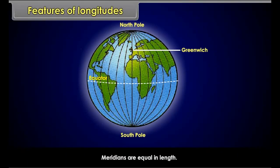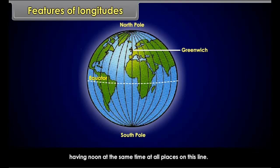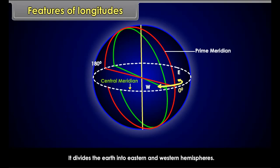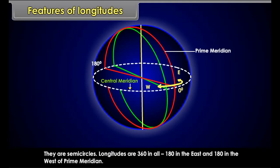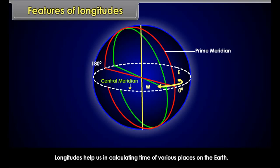Longitudes: Angular distance from the prime meridian is termed as longitude. Noon occurs at the same time at places located on a line of longitude. Features of Longitudes: Meridians are equal in length. All the longitudes converge at the poles. The longitude running through Greenwich near London was first chosen as the prime meridian. Prime meridian means the chief or main meridian, having noon at the same time at all places on this line. The prime meridian is zero degrees longitude and it divides the earth into eastern and western hemispheres.